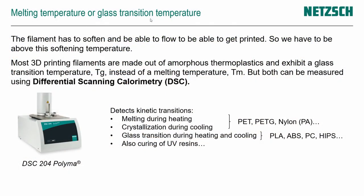Here at NETCH Analyzing and Testing we have devices to check what the softening temperature is. We use differential scanning calorimetry — short DSC — to analyze that. A DSC detects the changes in energy needed to change the state of a material: either you need to input energy or energy is released. For the different materials used in material extrusion, we can detect either the melting temperature or the glass transition temperature with that device.